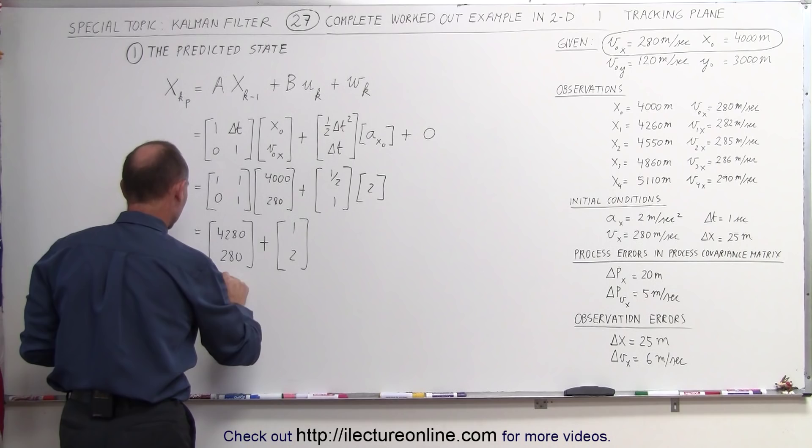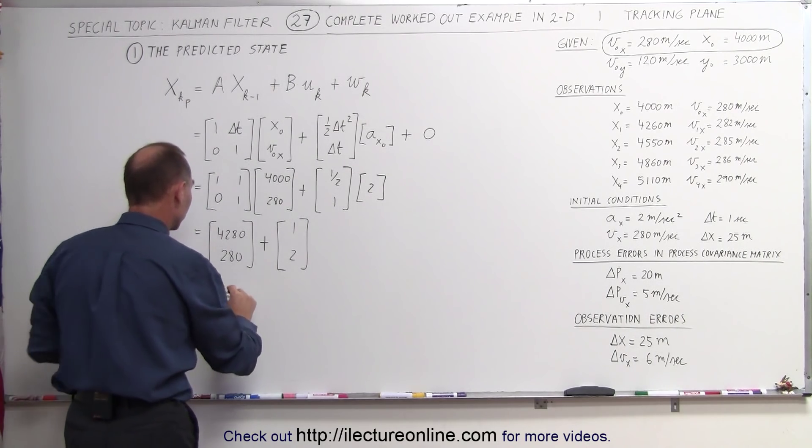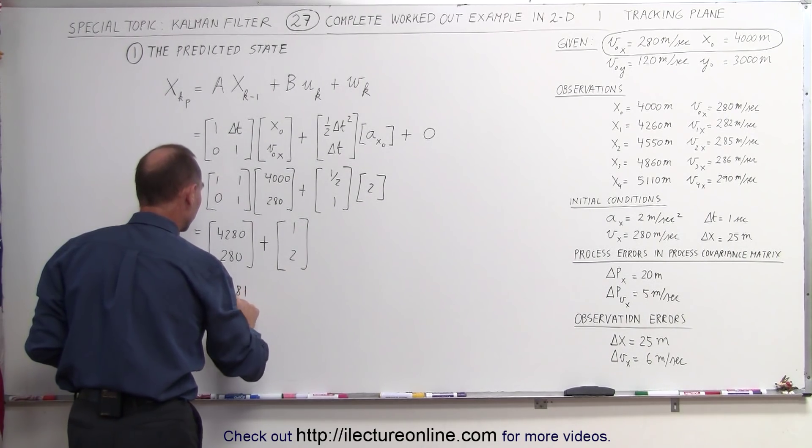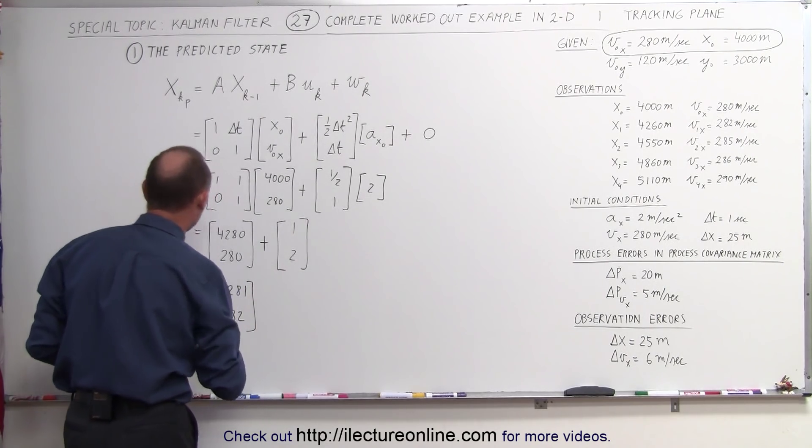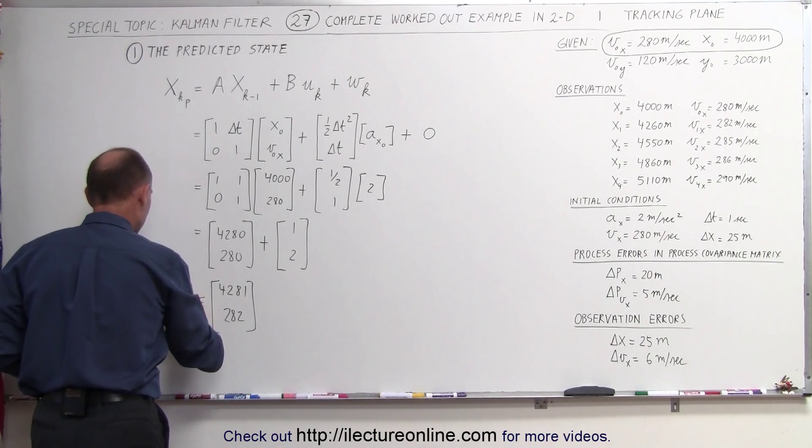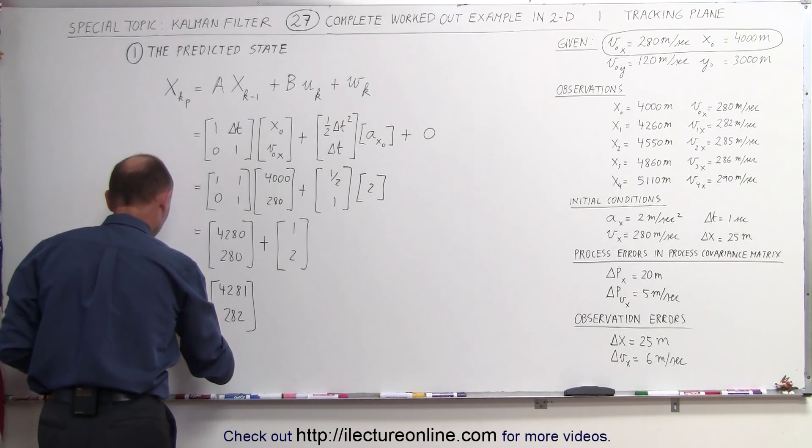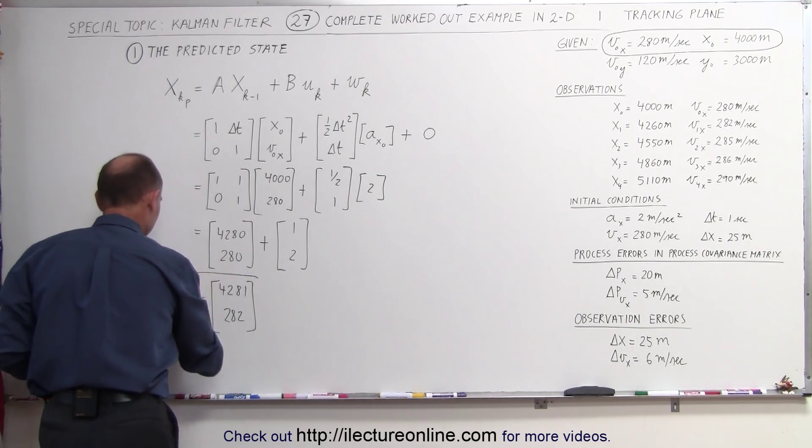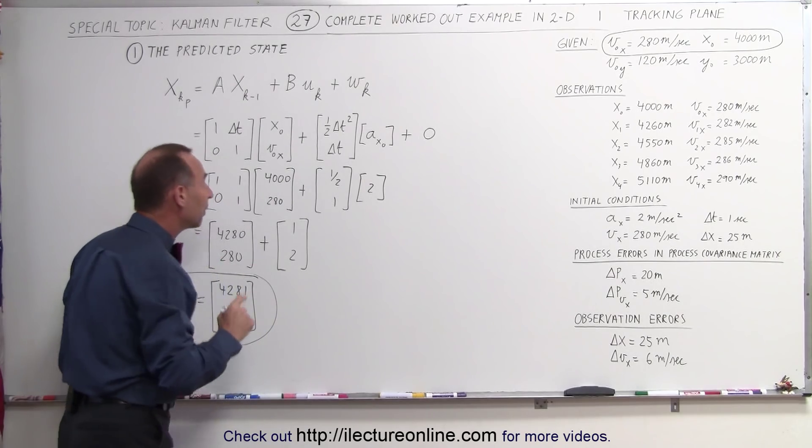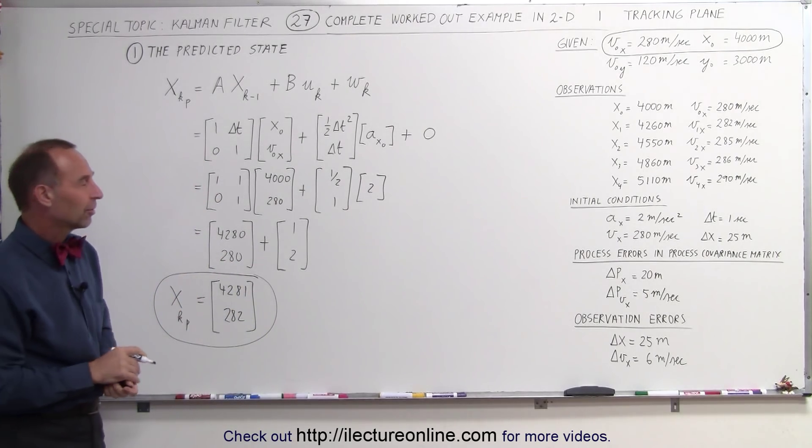So when we add those together, we have a new position, or new predicted position, of 4,281 meters and 282 meters per second for the velocity. So this becomes the new, or the current, predicted state based upon the first part of the process of the Kalman filter.